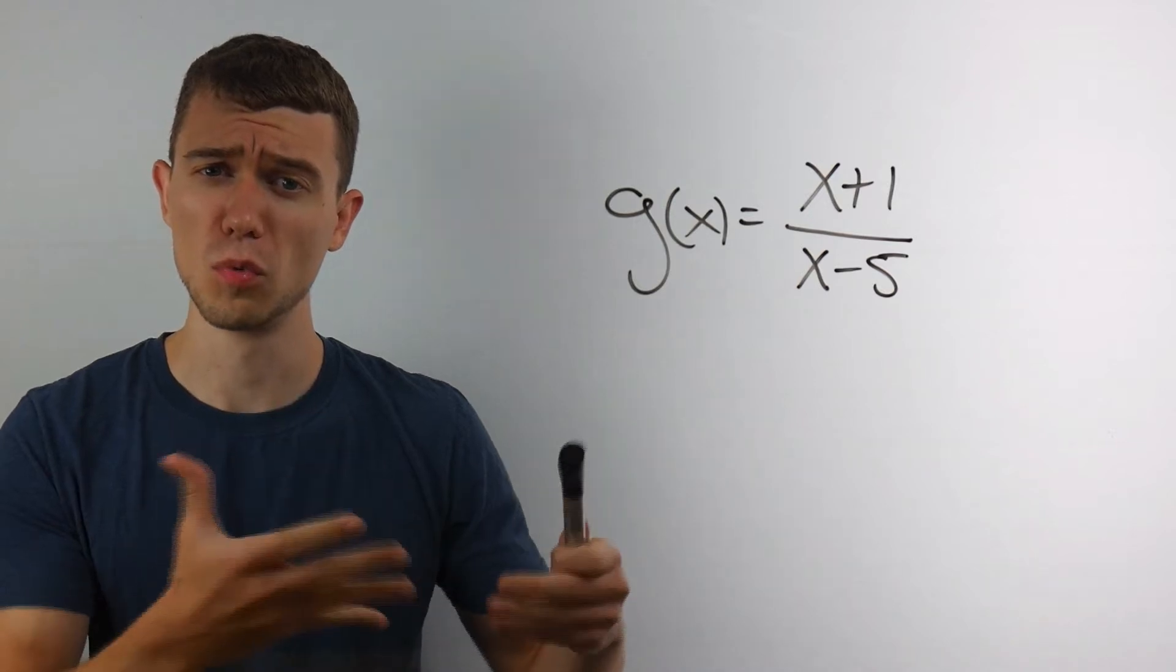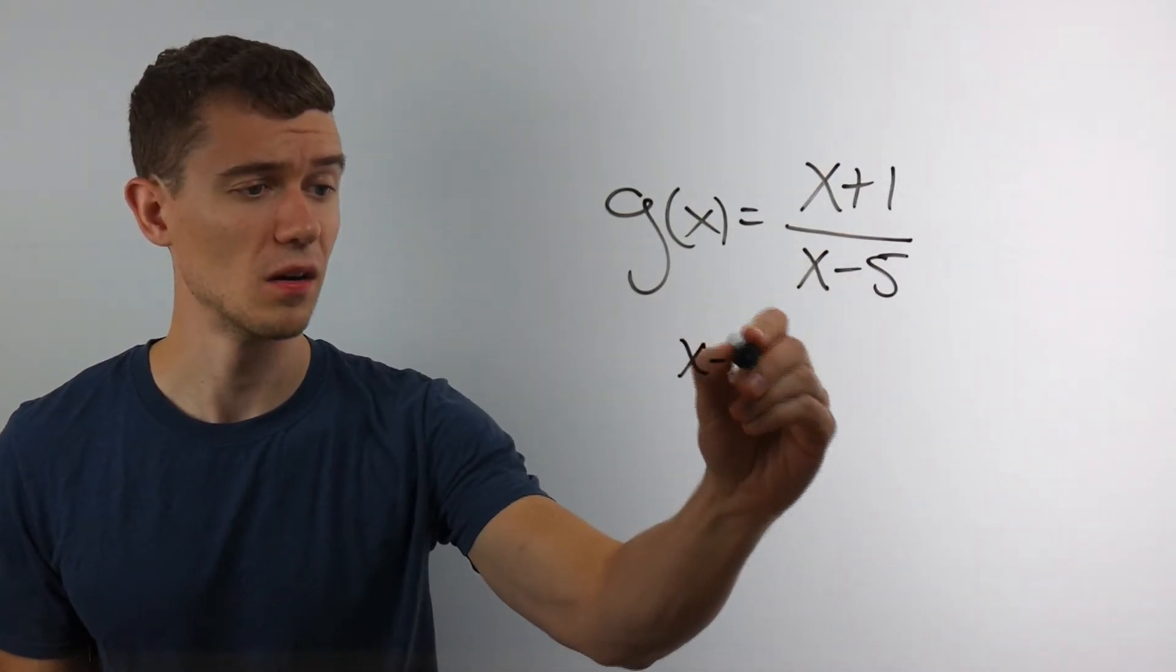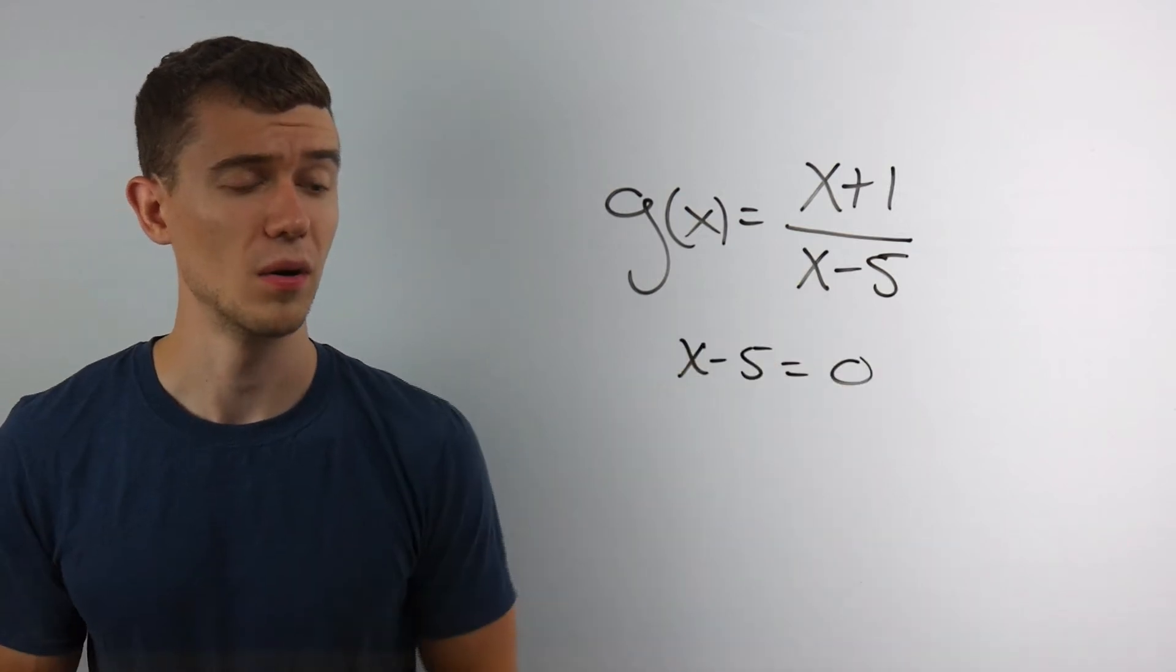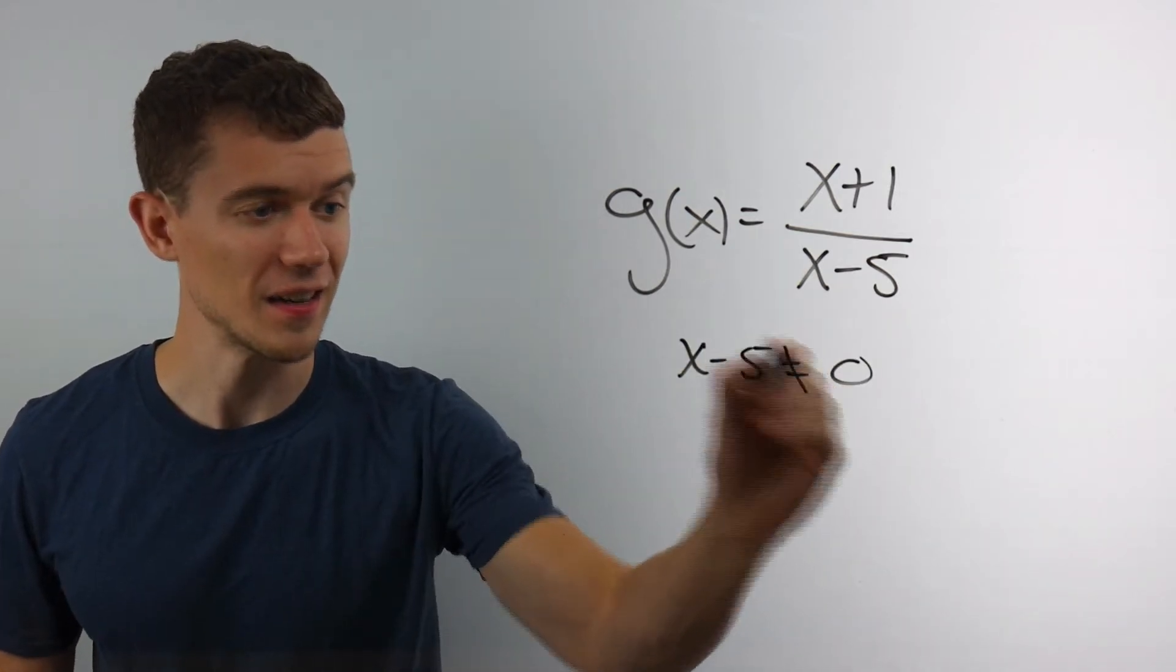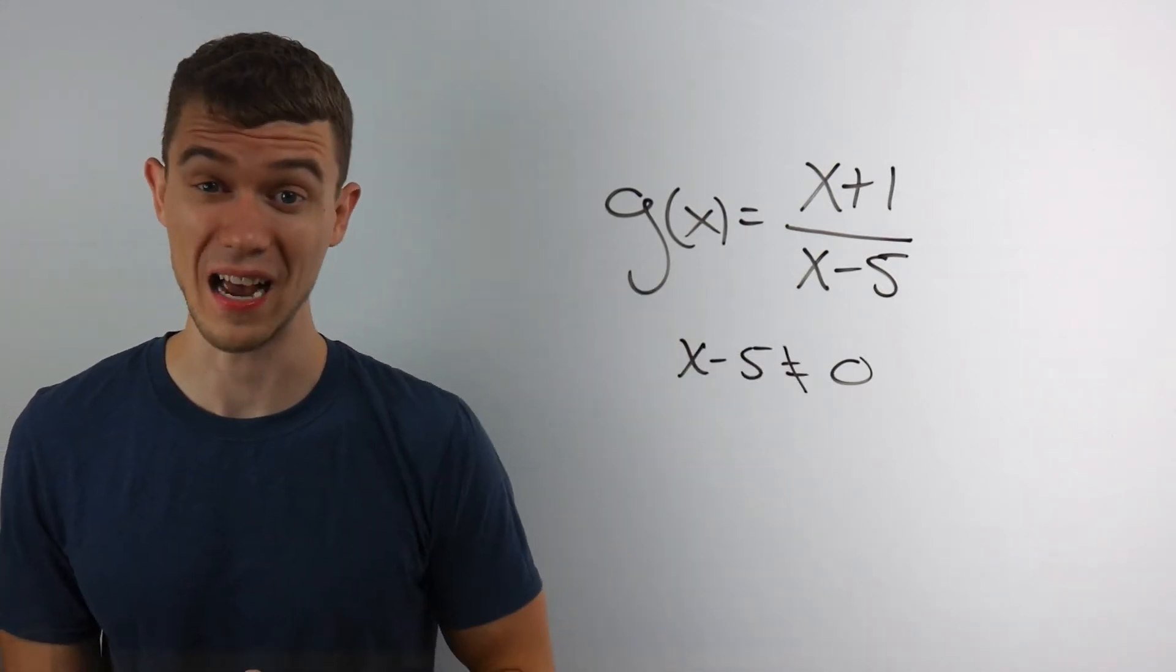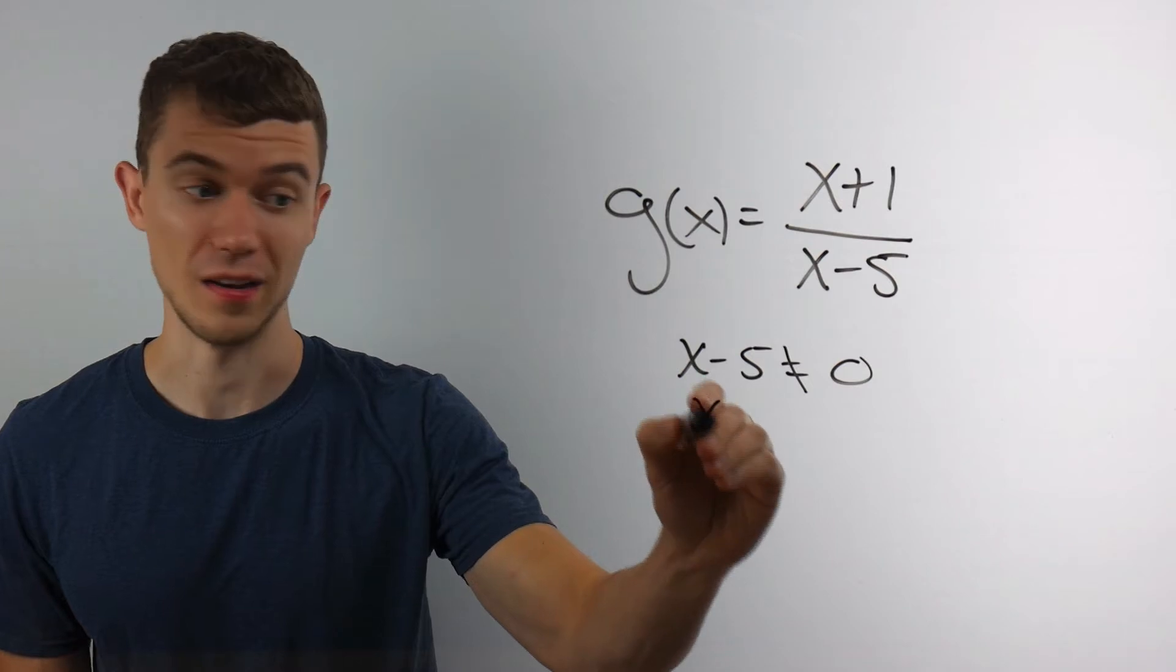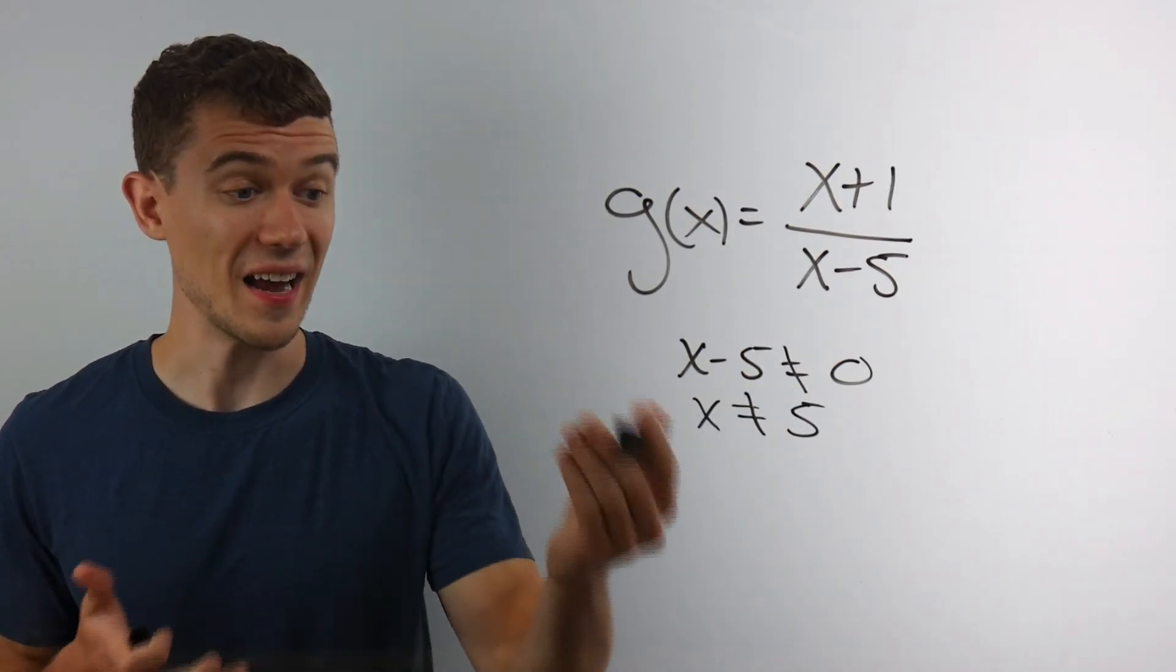So let's solve for where we do divide by zero. That's when the denominator would equal zero. And so I had better ensure that this does not happen, right? The bottom is not allowed to be zero. It's easy enough to solve. Simply add five to both sides. And there we go.